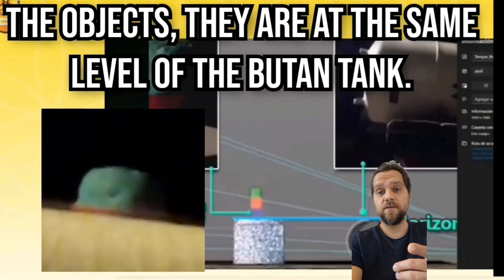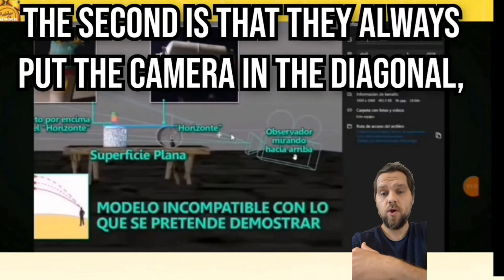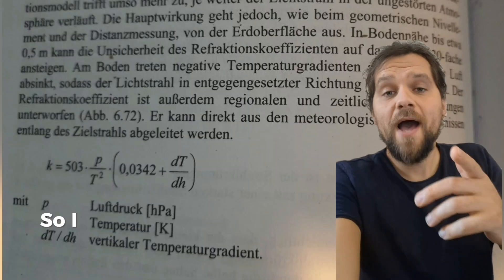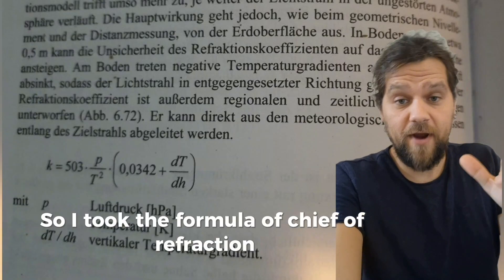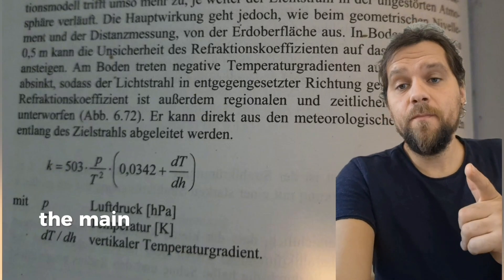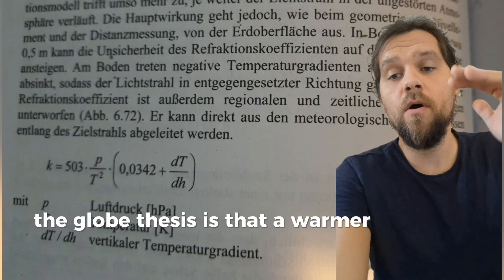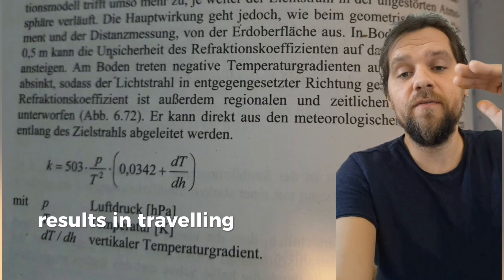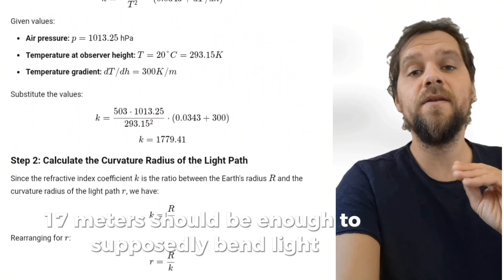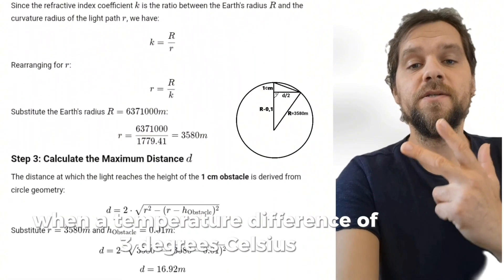The object is at the same level as the camera, and they always angle the cameras diagonally trying to reach the top. So I took the formula of chief of refraction Walter Bislin and tested it at small scale. The main important value in the refraction claim is the temperature gradient. The globe thesis is that a warmer top layer results in light traveling around curves. The calculations revealed that already 70 meters should be enough to supposedly bend light one centimeter when a temperature difference of three degrees Celsius per centimeter is achieved.